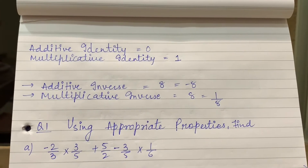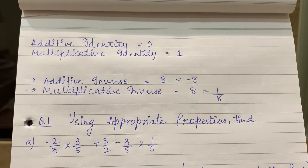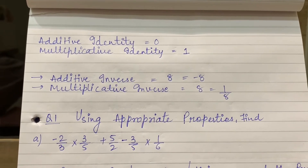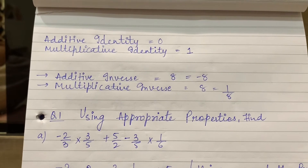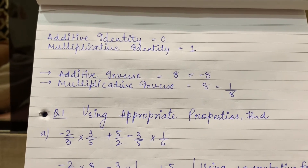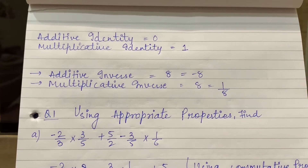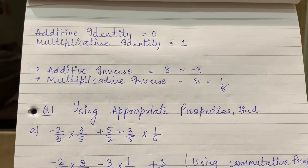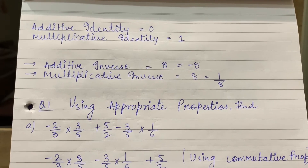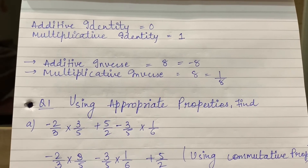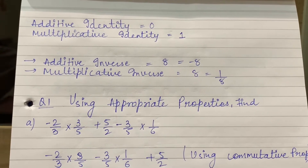Now, additive identity and additive inverse are two different points. Additive inverse and multiplicative inverse are the next points. Inverse means that the sign changes — if it is plus, then it will be minus, and minus then it will be plus. Similarly, for multiplication: it will become divide and divide will become multiply.